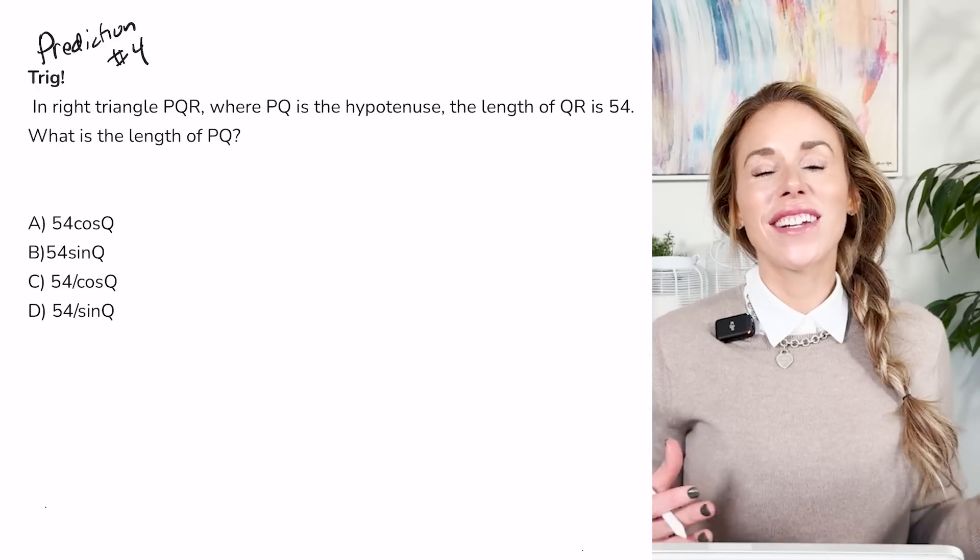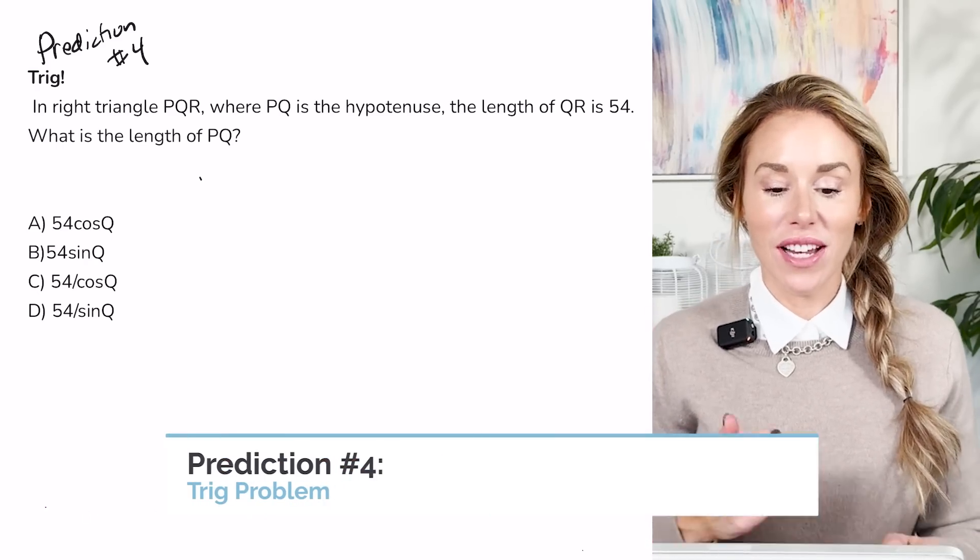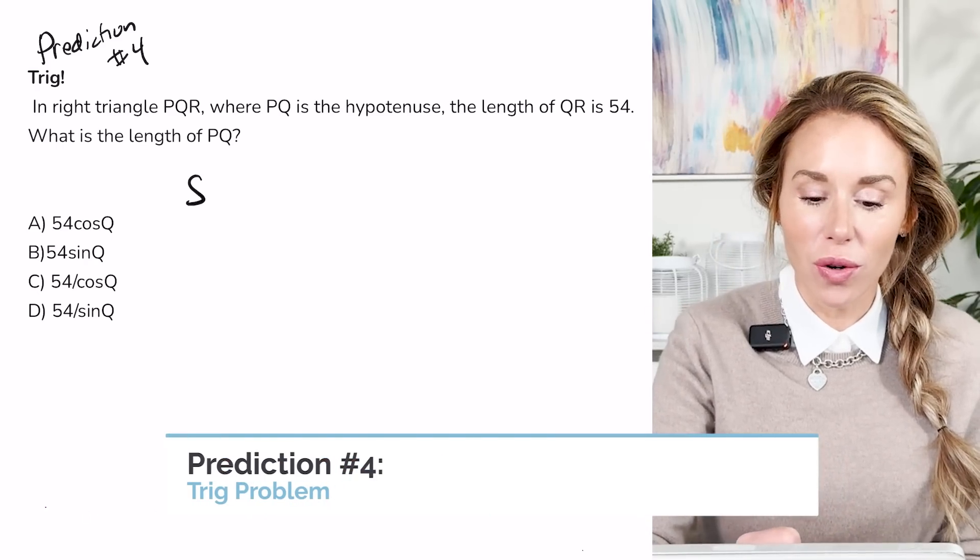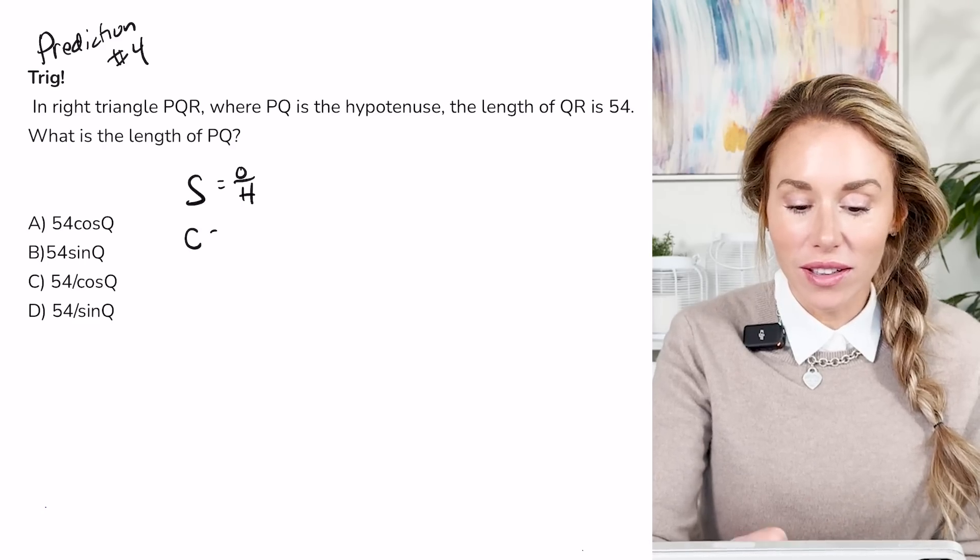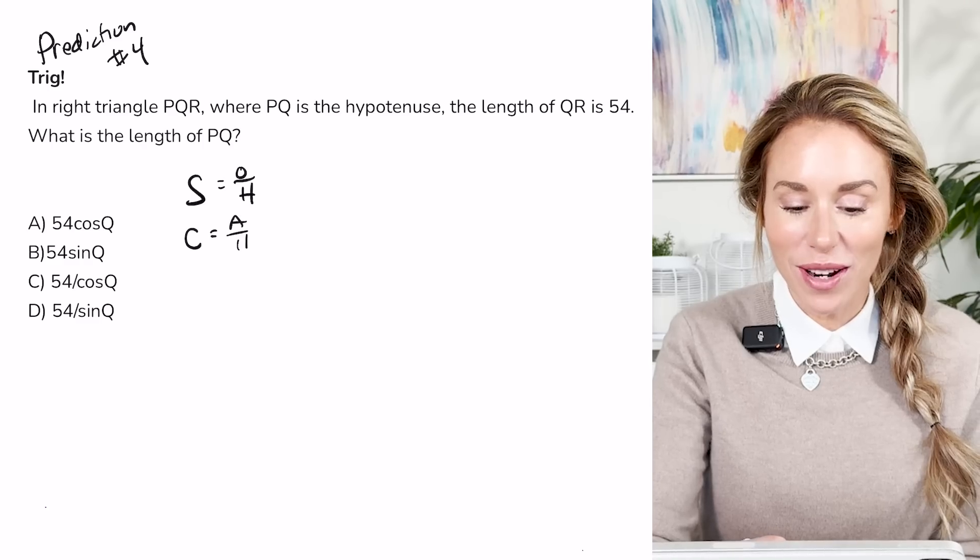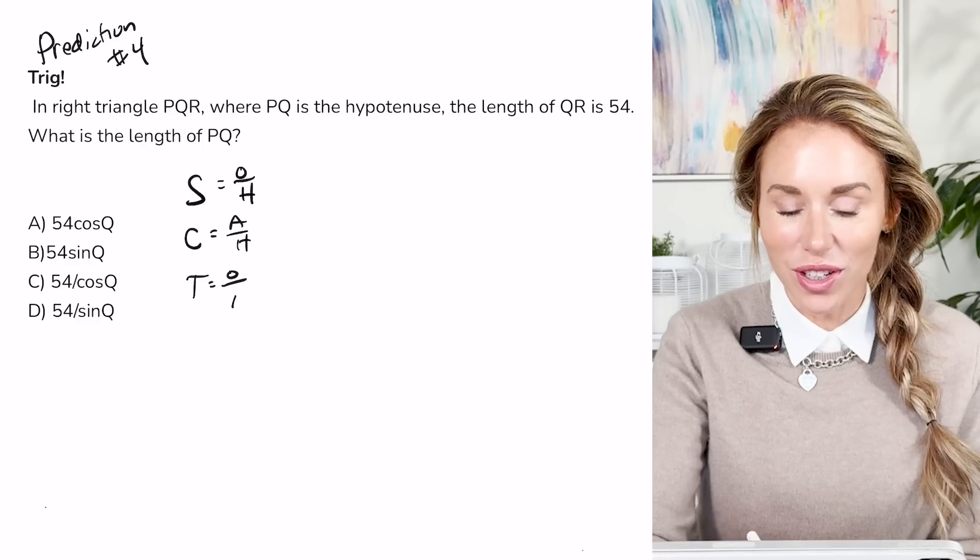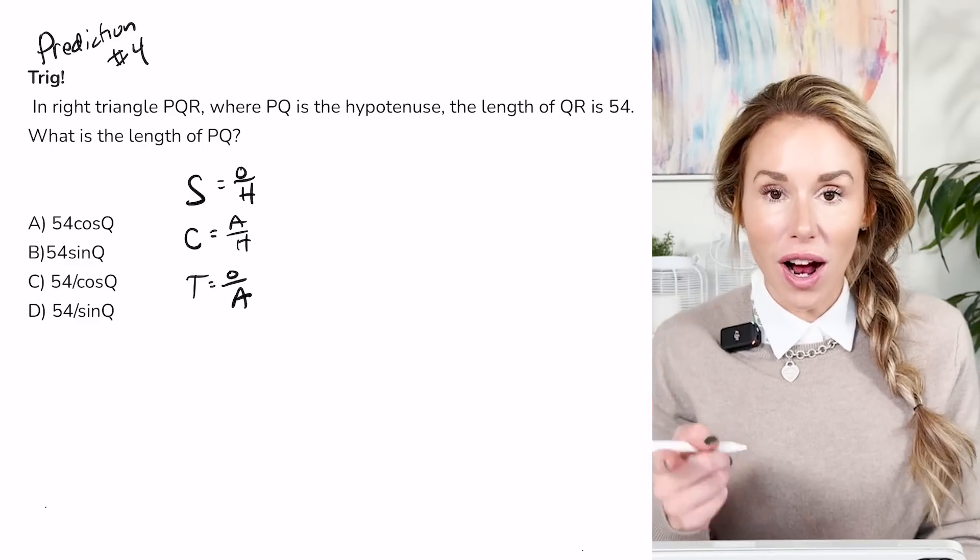All right, guys, my fourth prediction is that you're going to have a trig problem on this test. So make sure you understand SOHCAHTOA, right? Sine is opposite over hypotenuse. Cosine is adjacent over hypotenuse. Tangent is opposite over adjacent. And always draw a picture.